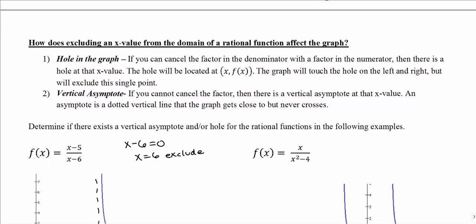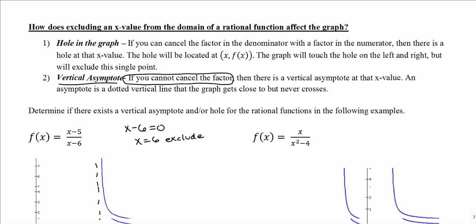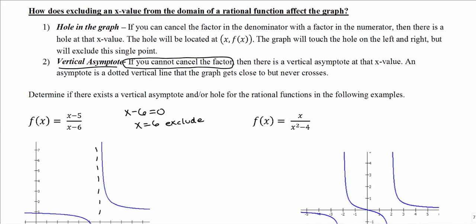You have a hole in the graph if you can factor and cancel the problem from the denominator. Looking at (x - 5) / (x - 6), nothing factors and nothing cancels. If you cannot factor and cancel, then you will have a vertical asymptote at that excluded x value. So excluding an x value from the domain results in either a vertical asymptote or a hole, depending on whether you can factor and cancel.